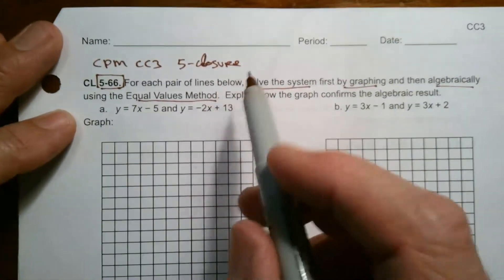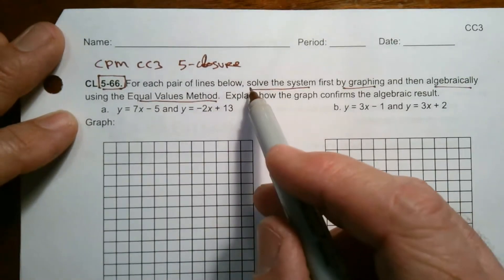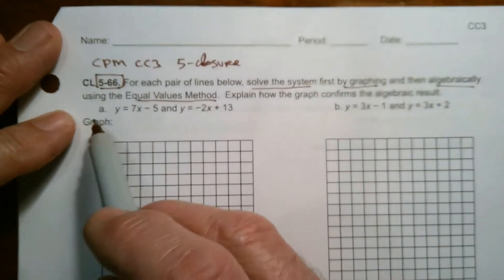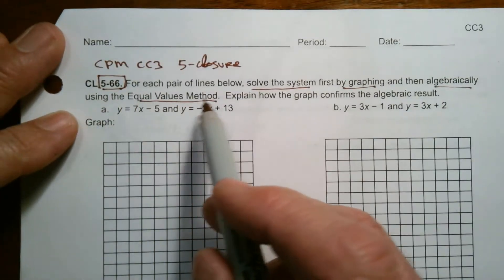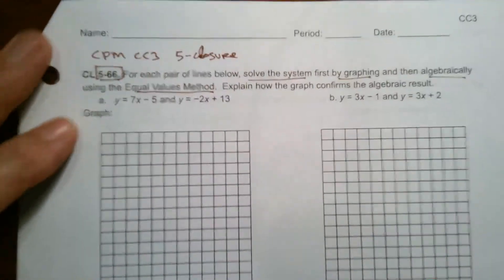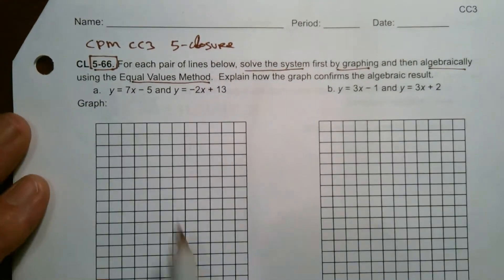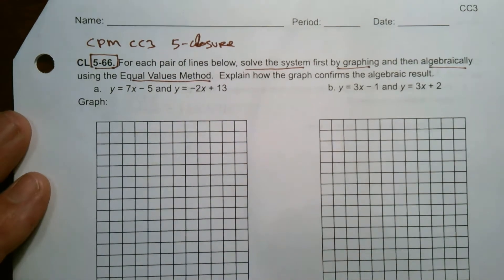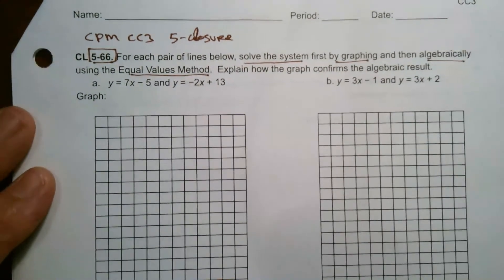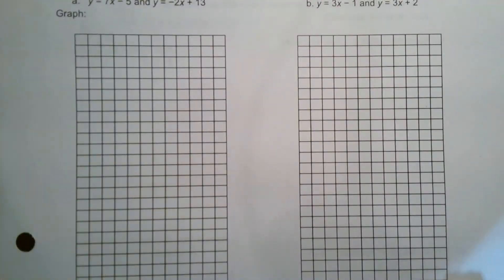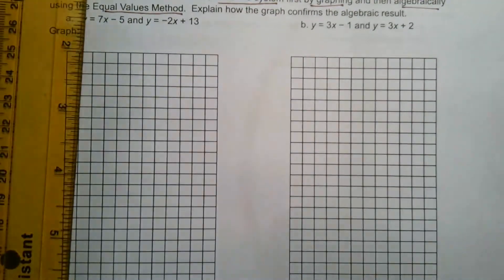It says: for each pair of lines below, solve the system by first graphing, then algebraically using the equal values method, and explain how the graph confirms the algebraic result. So let's start with part A. Here are my two equations, and I've got a set of axes here.